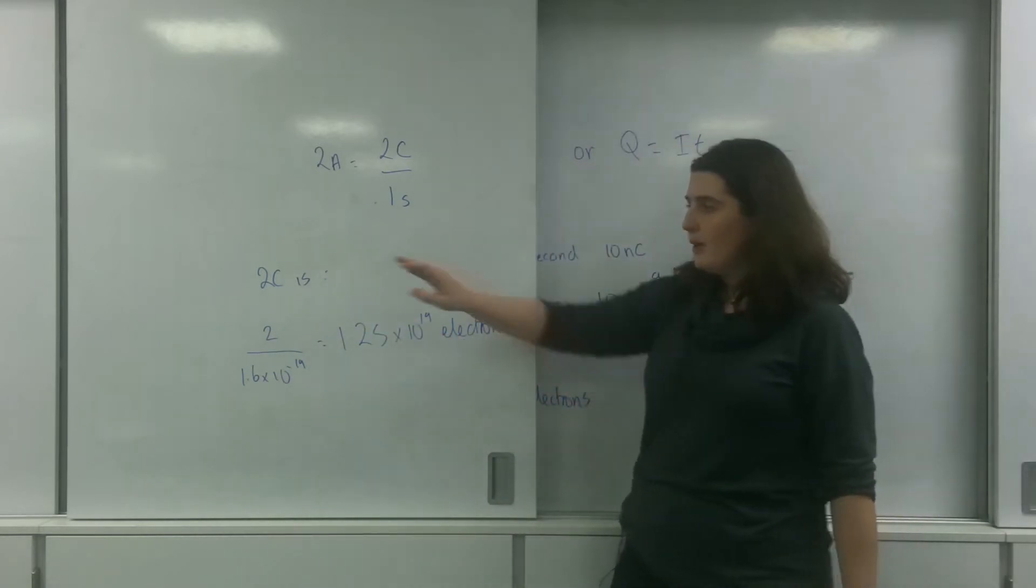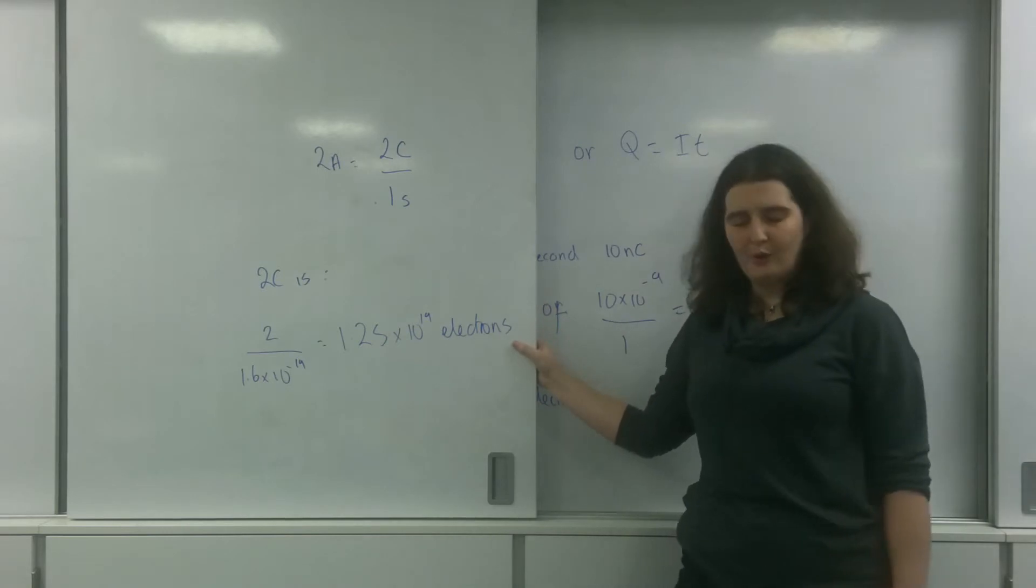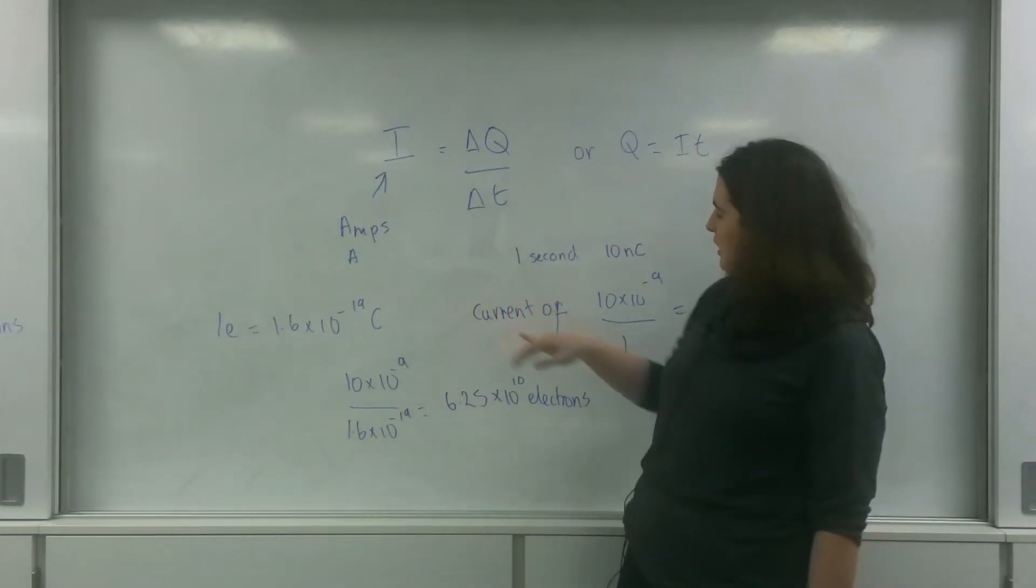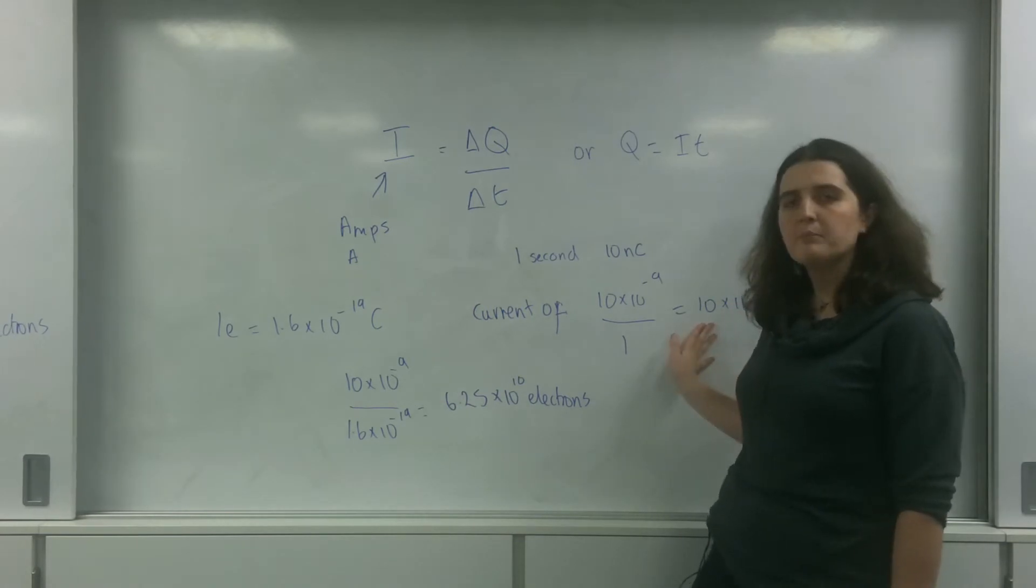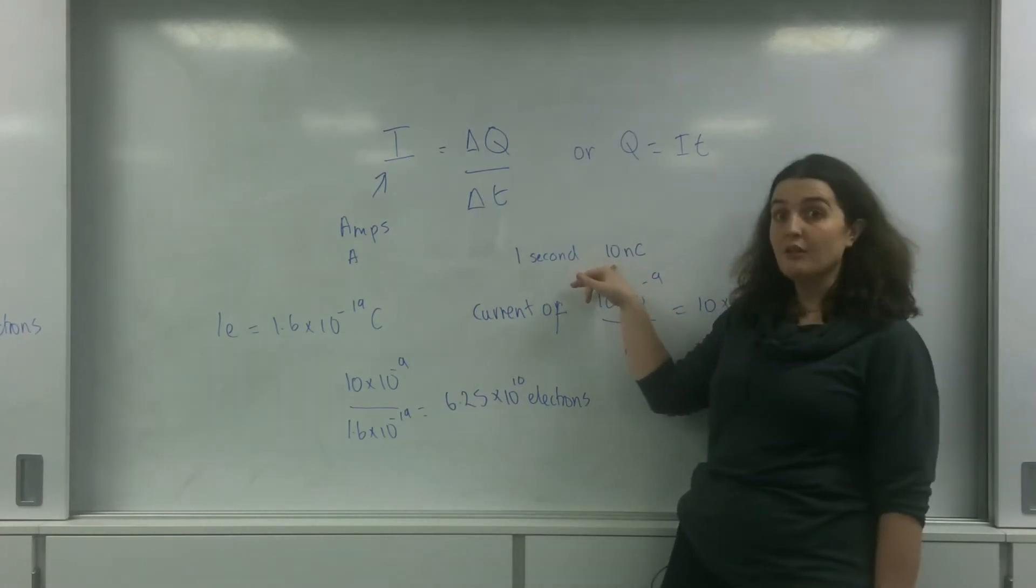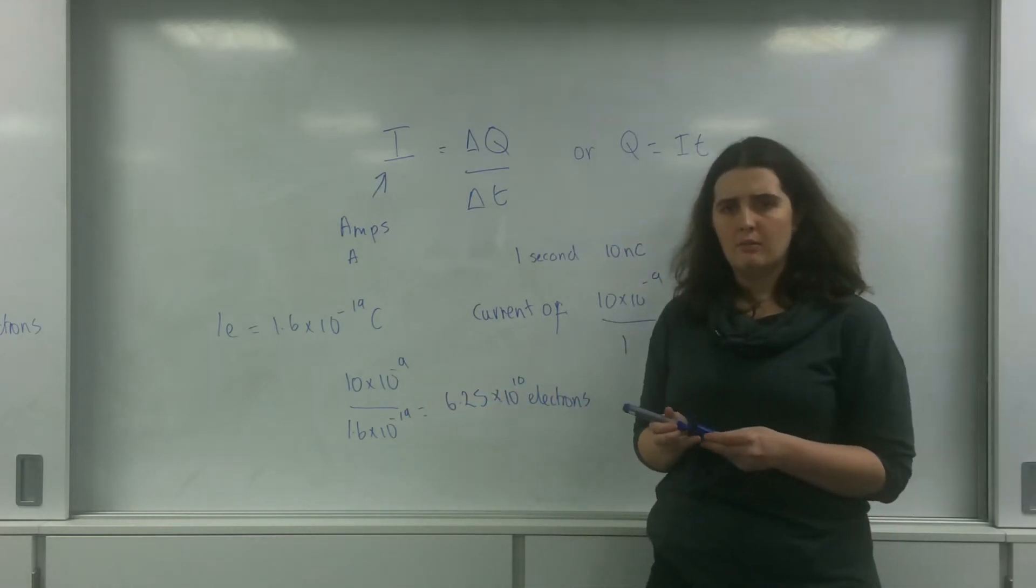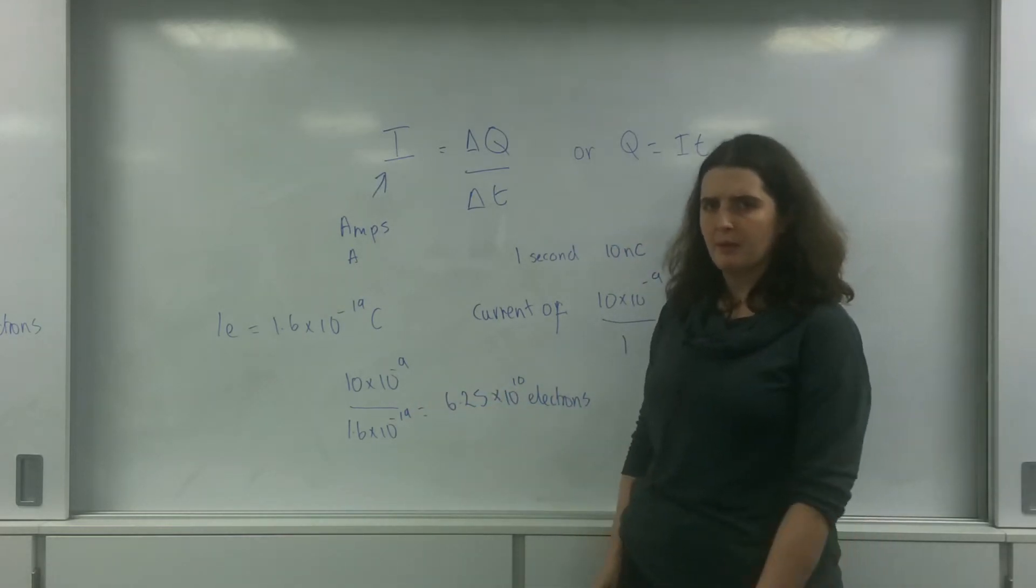So as you can see, when you have a very big current, you've got loads of electrons passing by. But when I have a very low current, 10 nanoamps, which is 10 nanocoulombs, I have a much smaller value of electrons passing by.